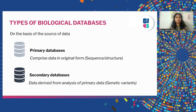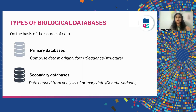Primary databases usually comprise data in a very original form. For example, sequence data or structure data — it is in a very raw form. All such information is stored in primary databases. Whereas secondary databases usually comprise data that is derived by analyzing the primary datasets. For example, genetic variant information is obtained only after we analyze the sequence data. So we are analyzing the primary data to get more data out of it, and such data are stored in secondary databases.